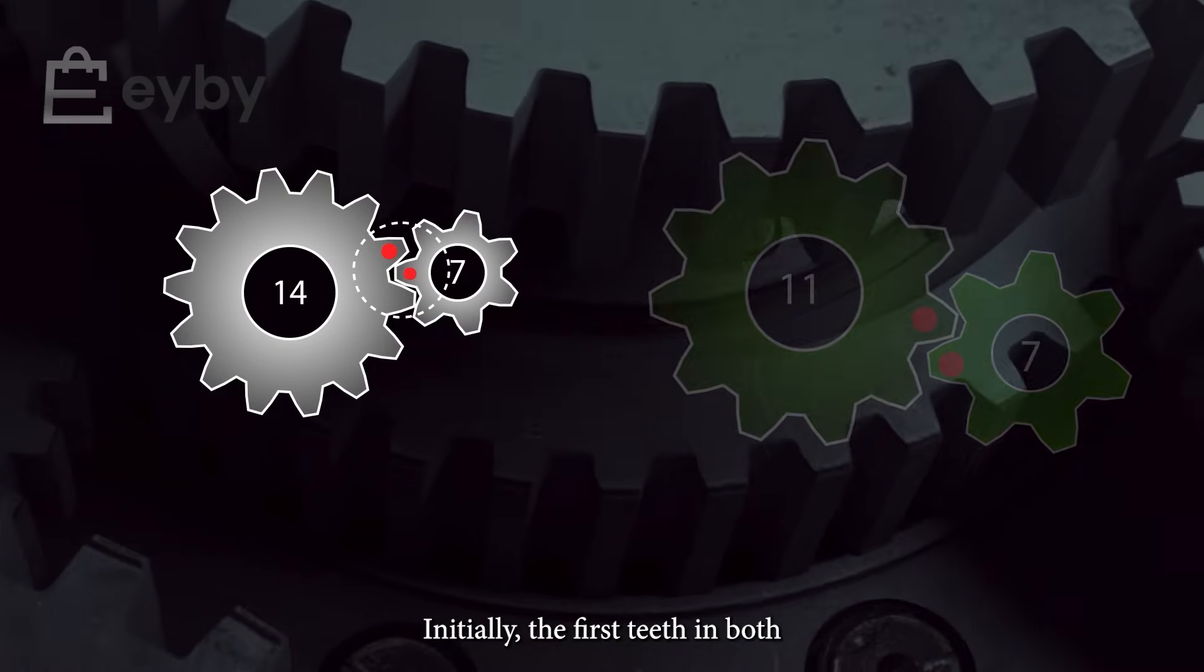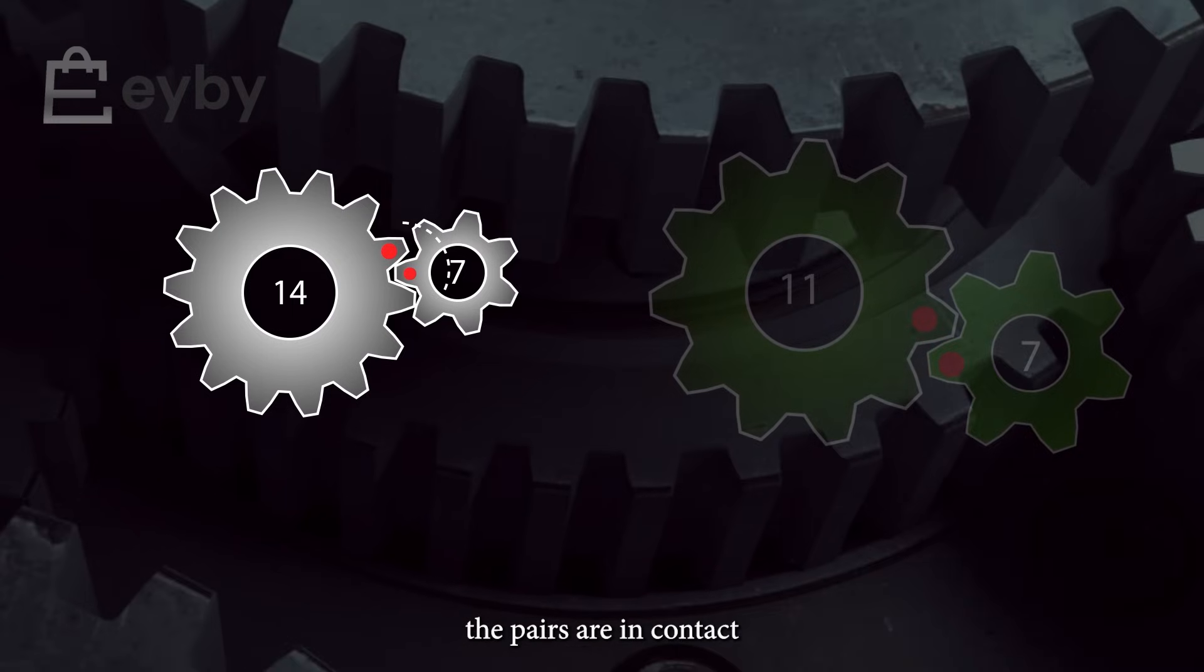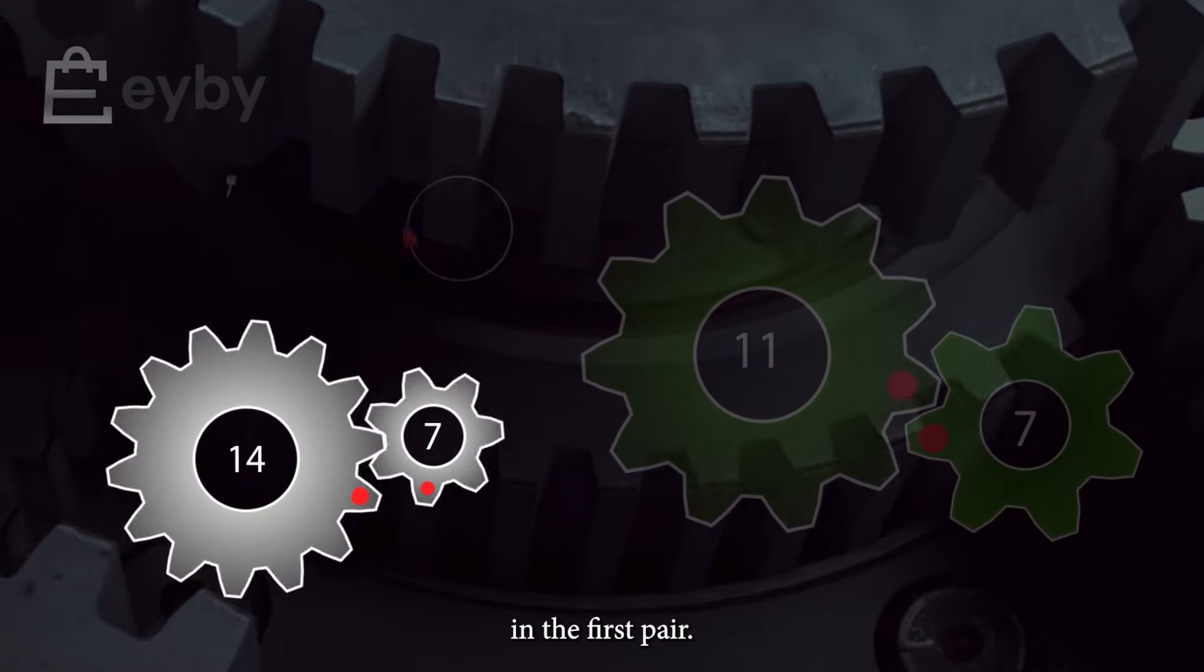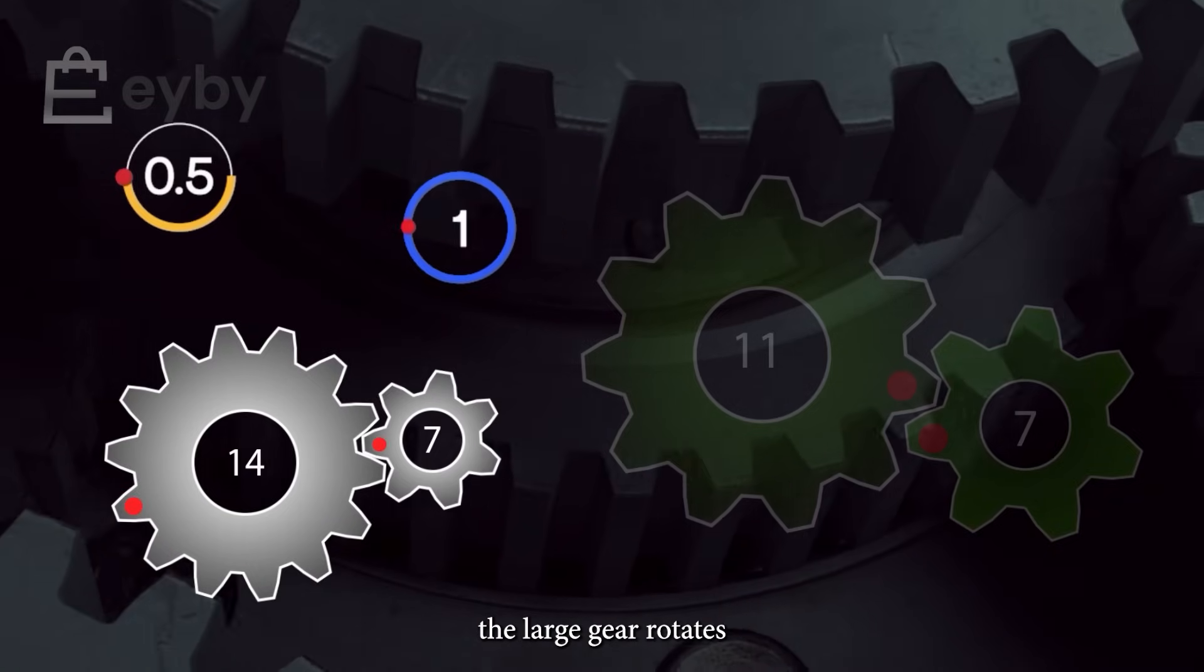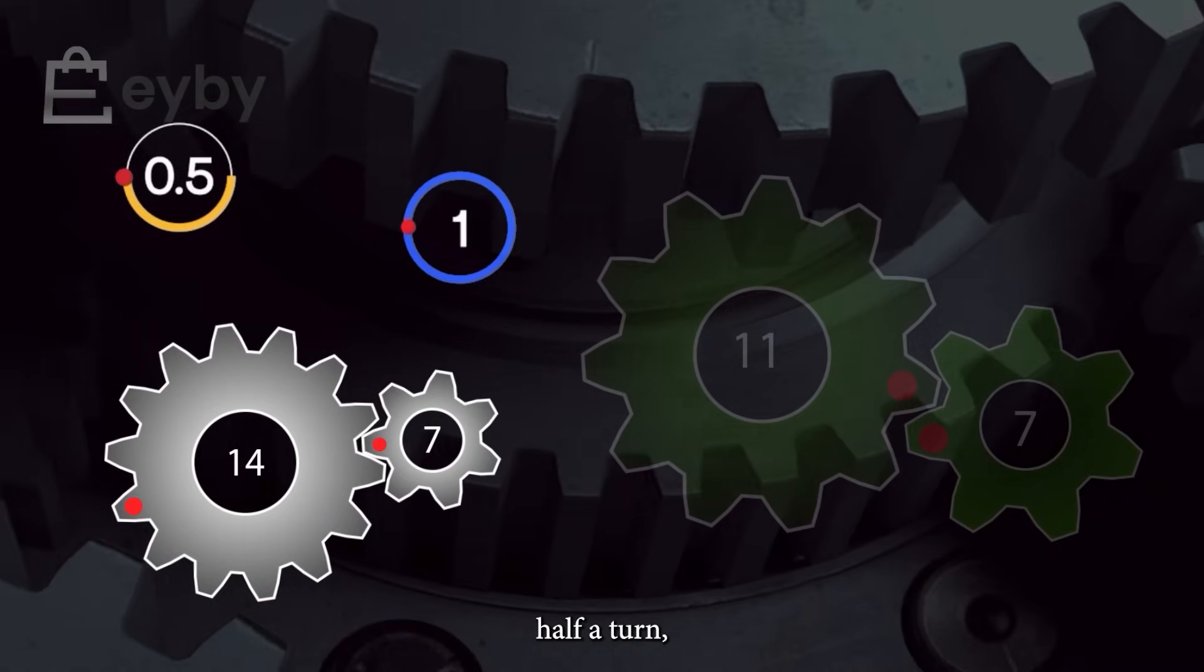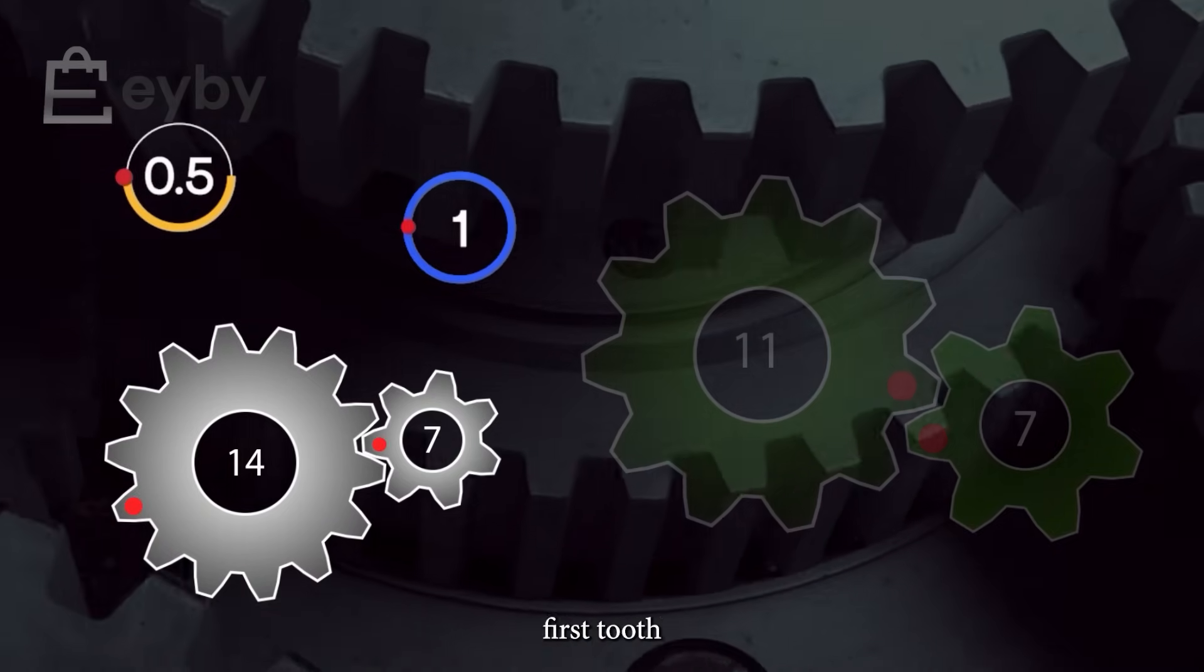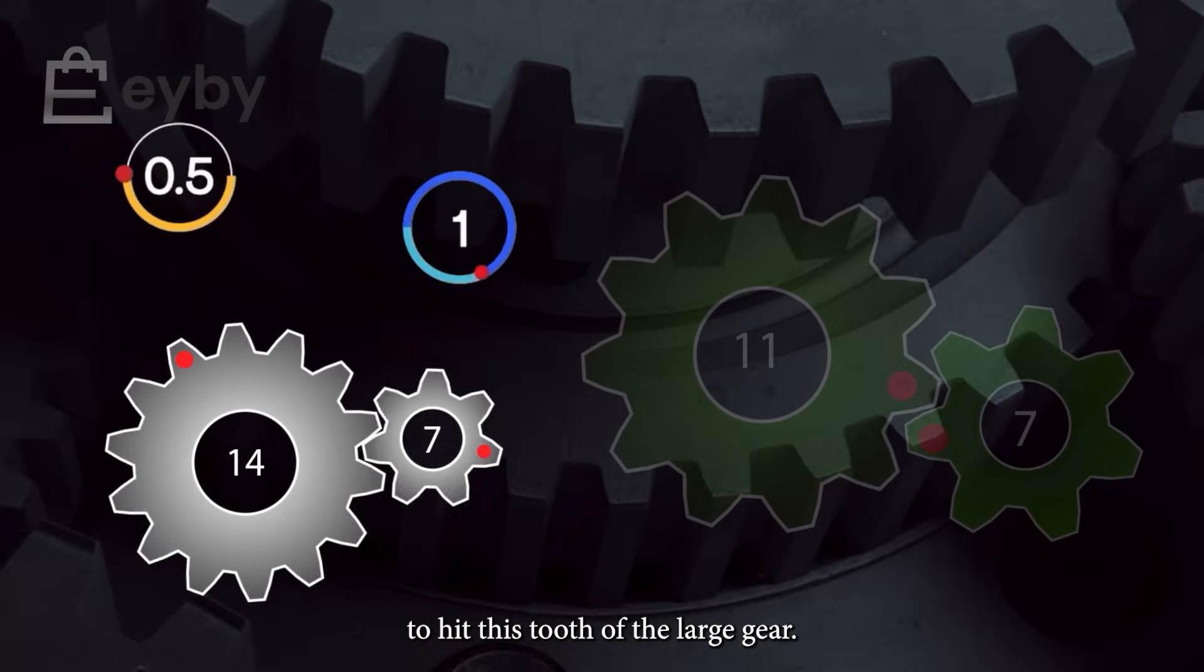Initially, the first teeth in both pairs are in contact. In the first pair, after a full turn of the small gear, the large gear rotates half a turn, causing the small gear's first tooth to hit this tooth of the large gear.